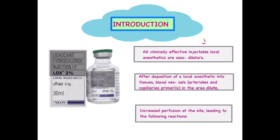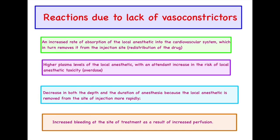Whenever we are using local anesthesia without any vasoconstrictor, since these agents are vasodilators, it leads to vasodilation in that particular area. This increased perfusion means increased amounts of solution are getting absorbed, which might lead to certain consequences. There are four reactions which might occur due to the lack of vasoconstrictors within the local anesthesia.